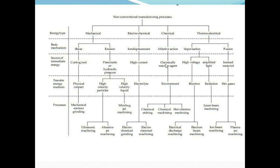These are the elaborated flowchart elements for non-conventional machining process. On this side, we have energy type, basic mechanism, source of intermediate energy, and transfer energy medium. These are all processes involved in unconventional machining. The first is energy type, already discussed. The types are: mechanical, electrochemical, chemical, and thermoelectrical, with electrical and thermal involved.